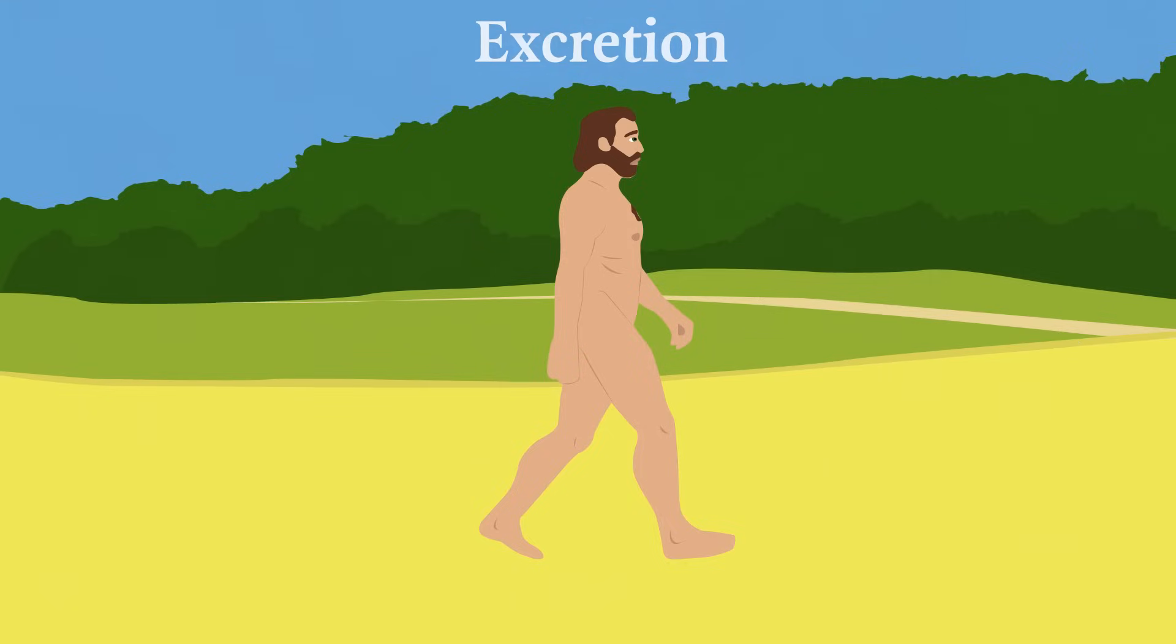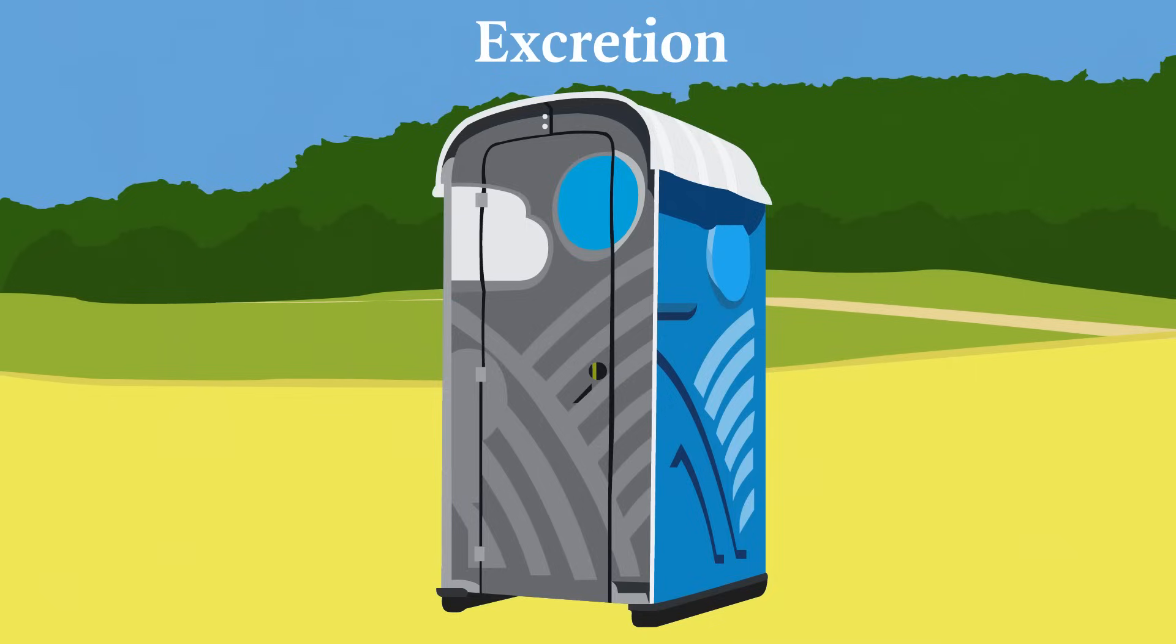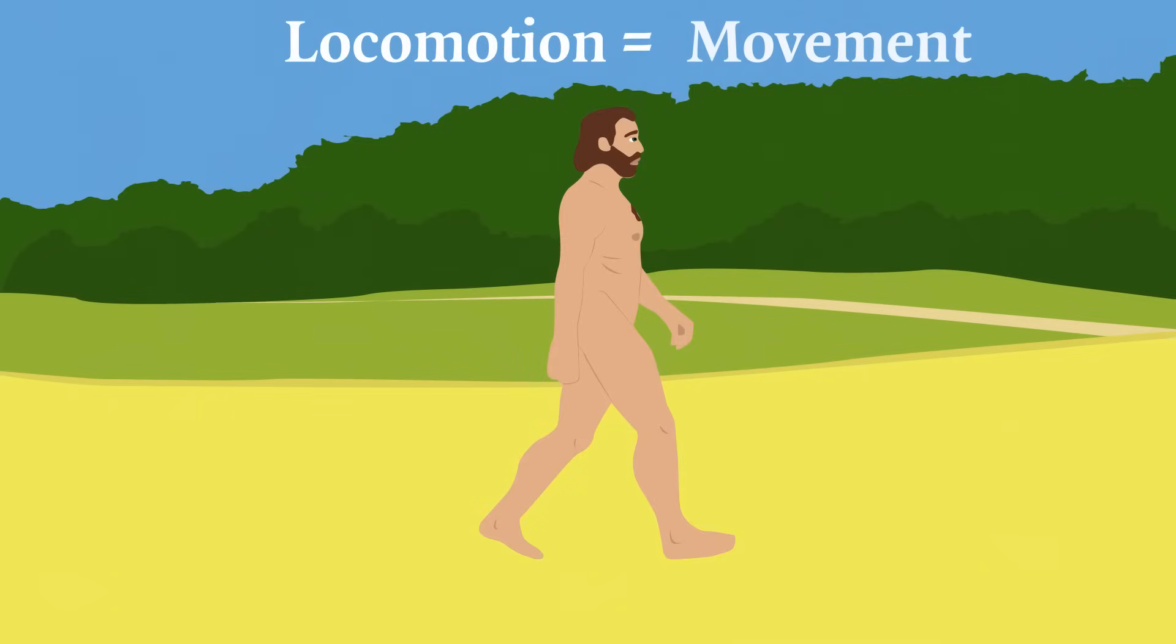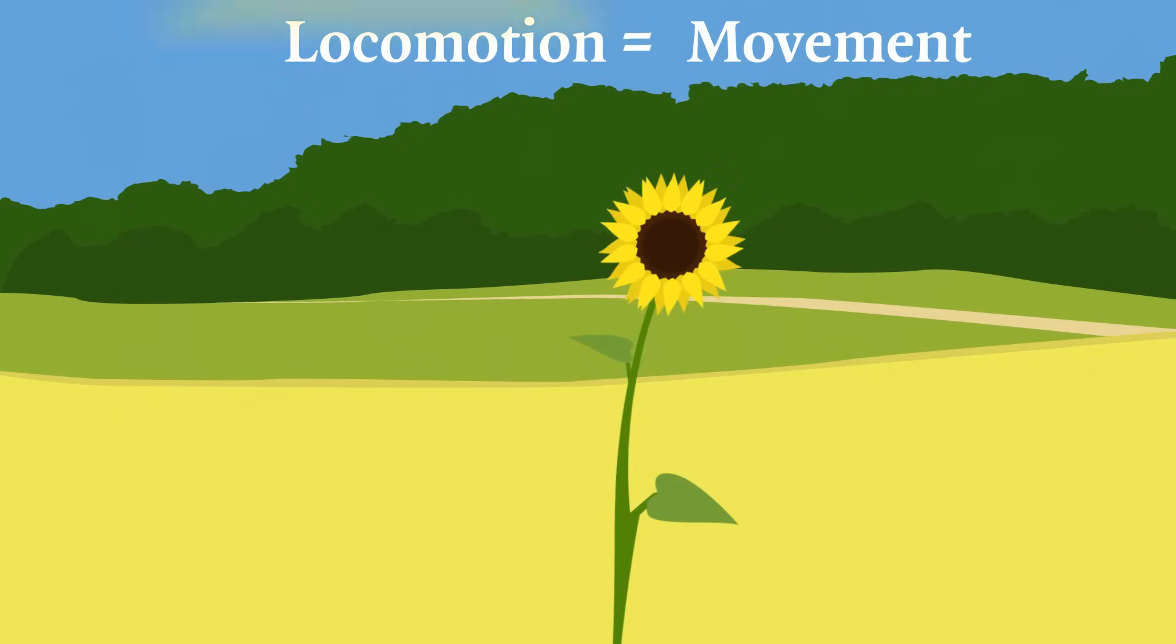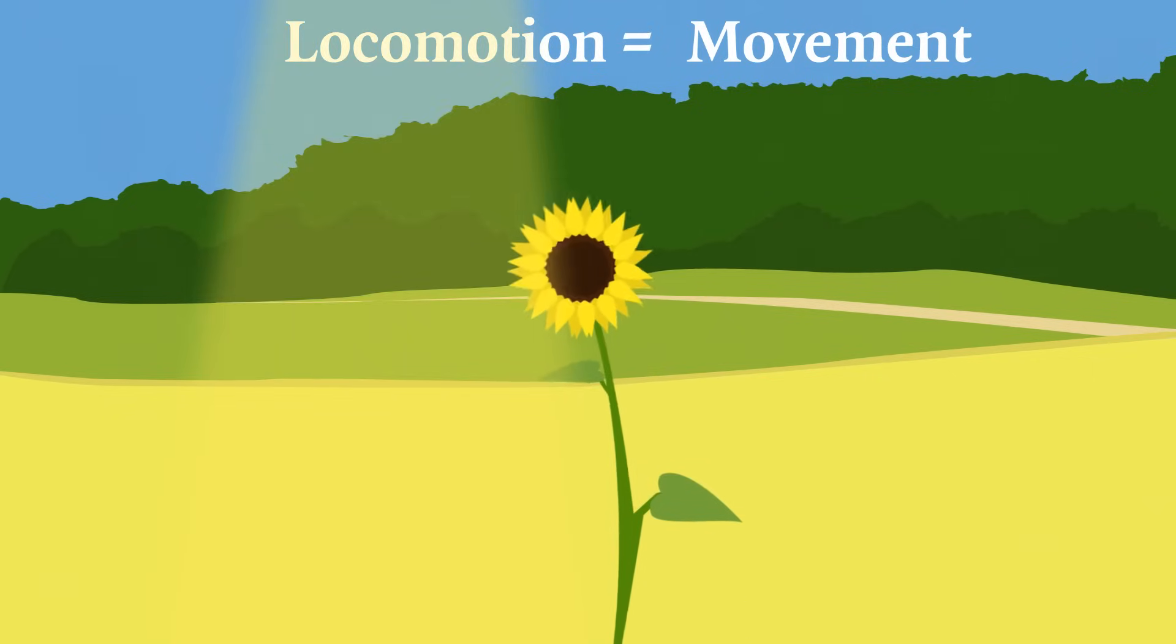There's excretion. The metabolic activities in our bodies generate waste products that we have to get rid of. There's locomotion or movement. In order to carry out activities, living things have to move around in a controlled way. Even plants move slowly in order to face the sun better.